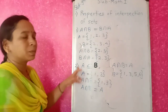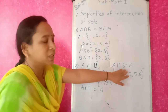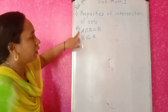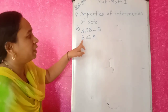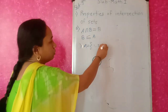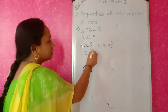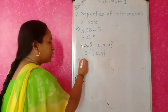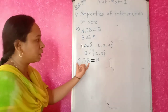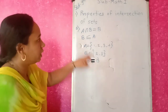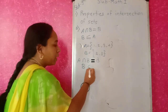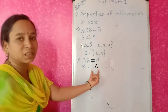If I reverse this: suppose B is a subset of A, then what is A ∩ B? Just give the answer in the comment box. If A ∩ B = B, then B is a subset of A. For example, A = {1, 2, 3, 4} and B = {2, 3}. A ∩ B gives common elements 2 and 3, which is exactly B. So A ∩ B = B, and yes, B is a subset of A. This is the third property.